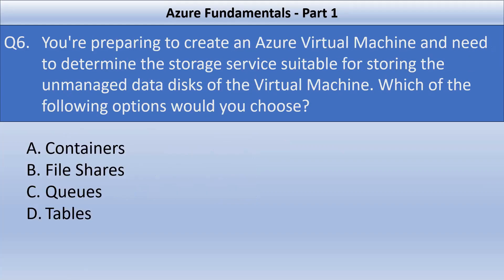Next question: you are preparing to create an Azure virtual machine and need to determine the storage service suitable for storing unmanaged data disks. Options are containers, file shares, queues, and tables. You should use containers — specifically, Azure Blob Storage containers — to store these unmanaged data disks. Blob storage is suitable for storing objects such as VHD files used as data disks for Azure virtual machines.